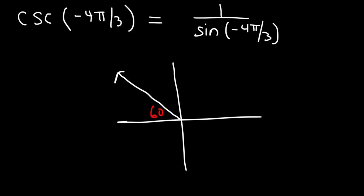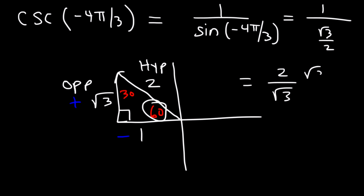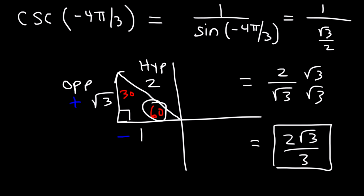So we have the 30-60-90 triangle: across from the 30 is 1, across from the 60 is √3, across from the 90 is 2. In quadrant 2, x is negative and y is positive. Sine is opposite over hypotenuse, which equals √3 divided by 2. Cosecant is the reciprocal: 2 over √3. Rationalizing gives cosecant of negative 4π/3 equals 2√3 divided by 3. Both cosecant and sine are positive in quadrant 2.